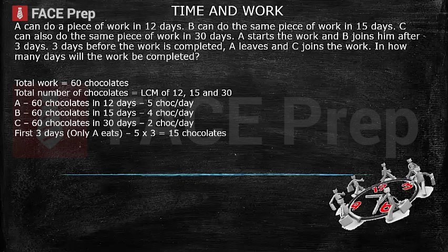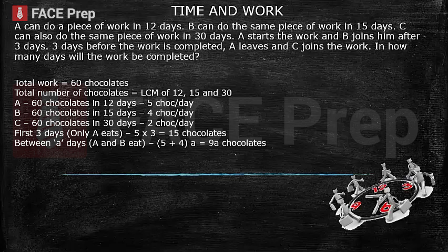The question says A starts the work and B joins him after 3 days. That means in the first 3 days only A was eating chocolates. A eats 5 chocolates in a day, so in 3 days A eats 15 chocolates. After 3 days B joins A, but it is not mentioned for how many days they work together, so we assume that is 'x' days. A eats 5 chocolates and B eats 4 chocolates in a day, so together they eat 5 plus 4, that is 9 chocolates in a day. For x days they will eat 9x chocolates.